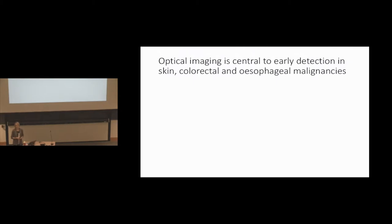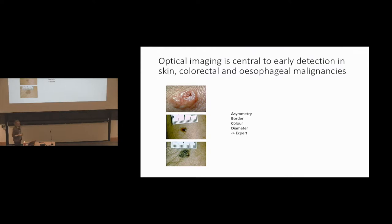In several different malignancies, optical imaging is actually vital for early detection of the disease. Early detection isn't just about finding the disease at a small stage — it's about finding it at a stage where we're able to make a minimally invasive intervention and treat with curative intent. In these particular three cancers — skin, colorectal, and esophageal — when we go in to treat early lesions, we do expect that the patient will be cured. For skin cancer, often it's patients themselves who notice the abnormality, and a physician or dermatologist will look at the morphology with the naked eye or a dermoscope, looking for the ABCDEs.